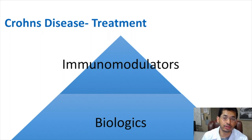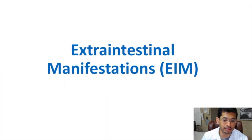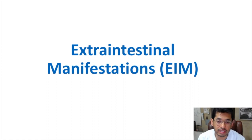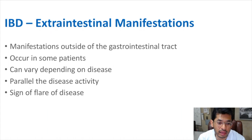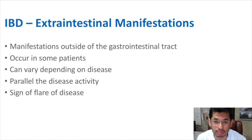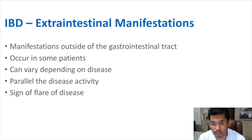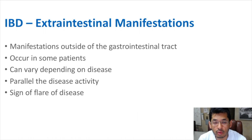Now we'll talk about some of the extra GI manifestations of inflammatory bowel disease. These are conditions which occur outside the colon that may be related to the disease process, or at least give a hint that a flare could be occurring. The severity can depend on what's going on within the GI tract. Some of these conditions can parallel the disease activity, meaning they can be a sign of worsening exacerbation. We often use these extra GI manifestations as a clinical clue for how patients are doing, and they can also indicate the possibility of worsening disease in the future.